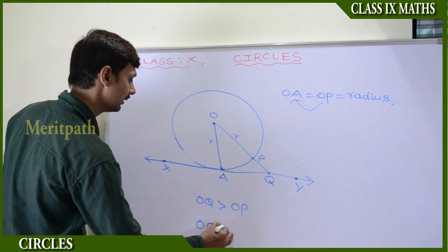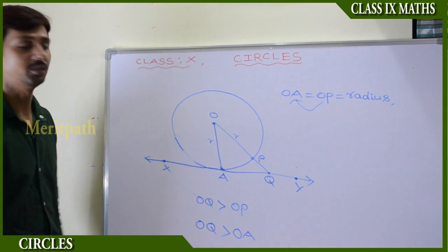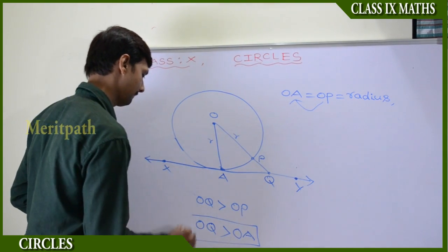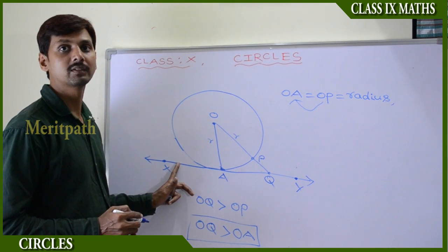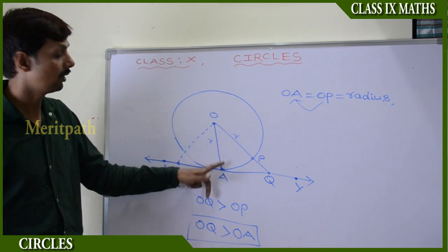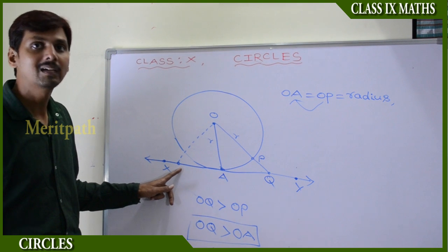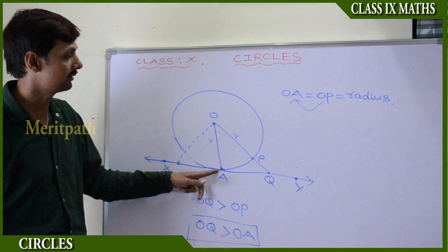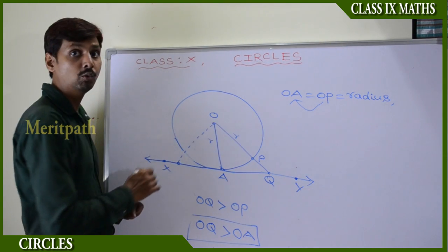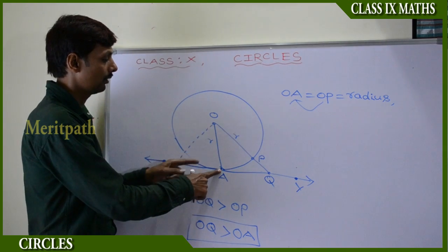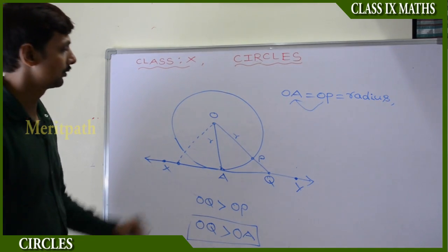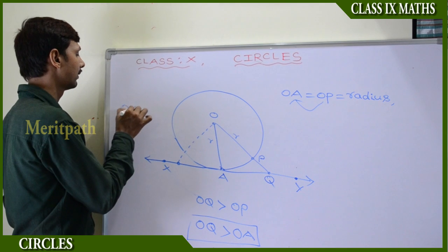OQ is greater than OE. So we understand that OQ is always greater than OE. When we take any point on the tangent outside of the circle, that distance is always greater than OE. We conclude that OE is the shortest distance from O to XY. Since OE is the shortest distance from O to XY, it is perpendicular to XY. Therefore, we have proved that OE is perpendicular to XY.